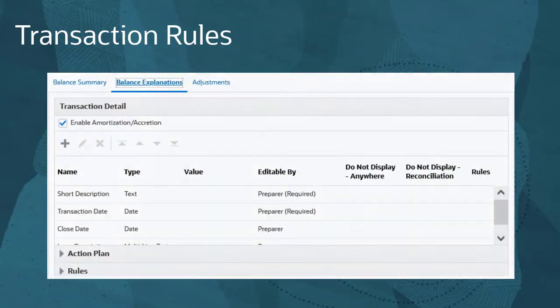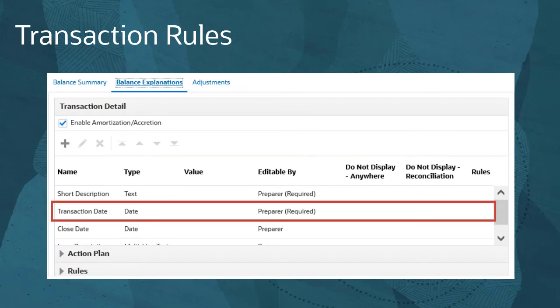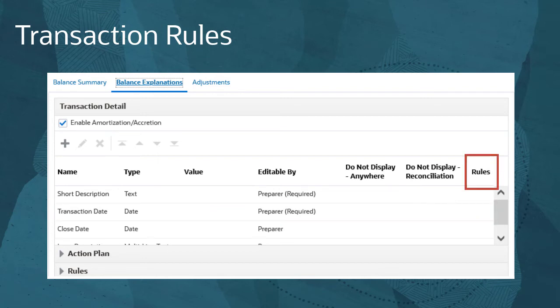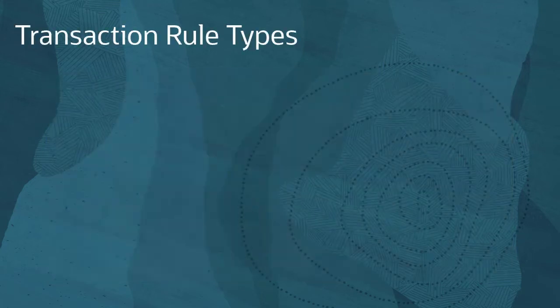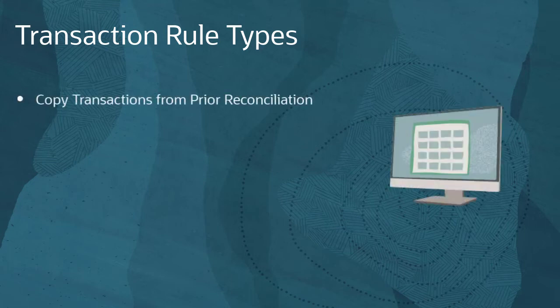Now let's talk about transaction rules. Transaction rules automate actions related to transactions, such as saving and copying. You can also use them to set access rights to attributes. You can create separate rules for each transaction tab in the reconciliation. For each rule type, you specify conditions that must be met for the rule to run. Copy transactions from prior reconciliation rules cause transactions from the prior period reconciliation to be automatically copied into the current reconciliation when its status changes from pending to open.